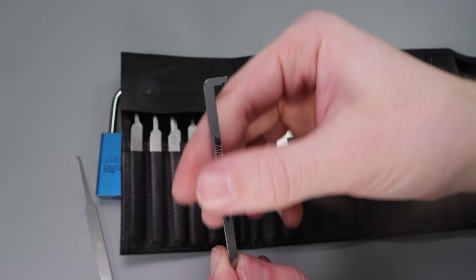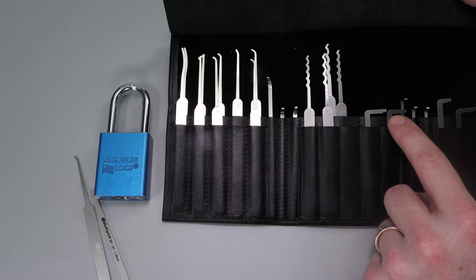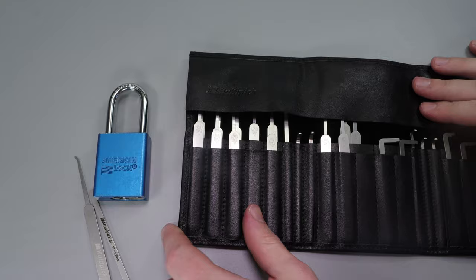One thing you might consider doing is using the one that's a little bit longer because the keyway is a little recessed on American Locks, but I don't think I will need it. So I'm going to get this lock up in the vise, then we're going to pick it open and see what it takes.